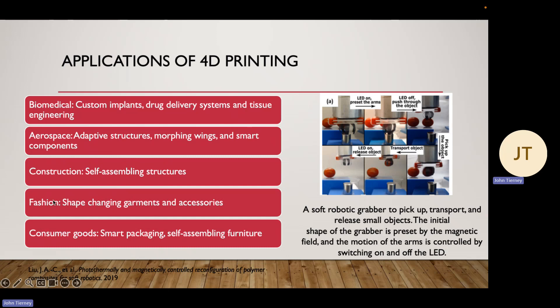Construction and consumer goods are essentially the same in the aspect of self-assembling structures, and fashion involves shape-changing garments. An example includes a specific type of 4D-printed material that can compress when exposed to lower temperatures. There's also, on an accessory basis, one that can change color when exposed to different types of light.